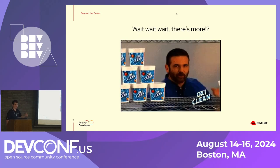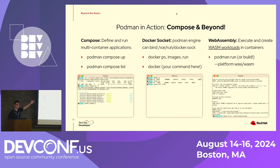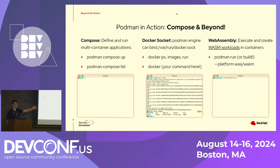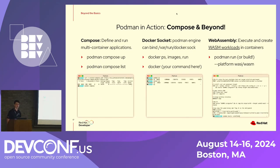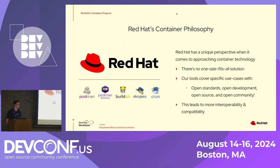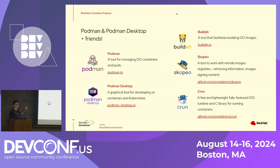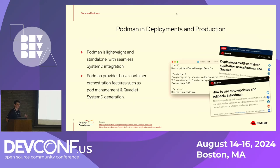Not only can we work with Compose for multi-container applications, you can also bind the Docker socket — so if I have a tool that works only for Docker, I can bind the Podman socket to replicate that. And if we're working with WASM, we can get the benefits of both WASM and containers at the same time. Red Hat approaches this as a Swiss Army knife: Podman for running containers, Podman Desktop for targeting Kubernetes, Buildah for working with images. CRUN is a really lightweight way to run containers with a much lower memory footprint.